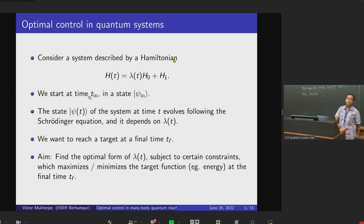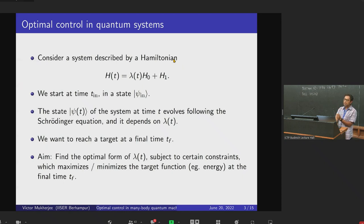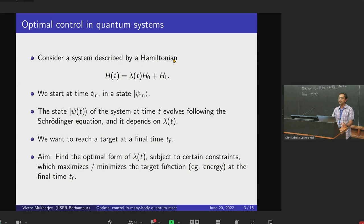We start at some initial time t_in at some arbitrary initial state ψ_in. The state ψ(t) of the system at any time t evolves according to the Schrödinger equation and depends on λ(t). The final target is to reach some particular final state at final time t_f. So the problem is: find the optimal form of λ(t) subject to certain constraints, which maximizes or minimizes some target function — for example, energy at the final time t_f. It is just a basic optimization problem.